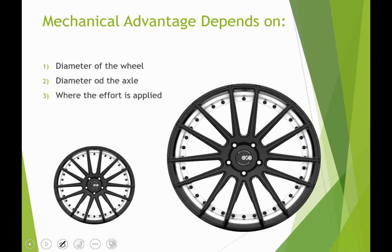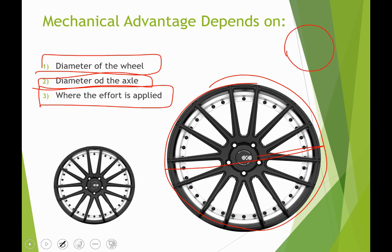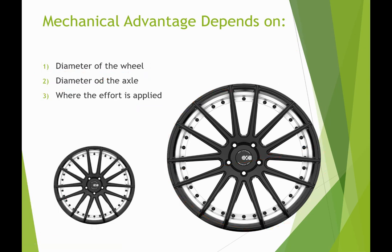The mechanical advantage depends on three important things: the diameter of the wheel, the diameter of the axle, and where the effort is applied. A circle's diameter passes through the center. These are the diameters of the wheel and axle. Where the effort is applied — whether to the axle or to the wheel — also matters.